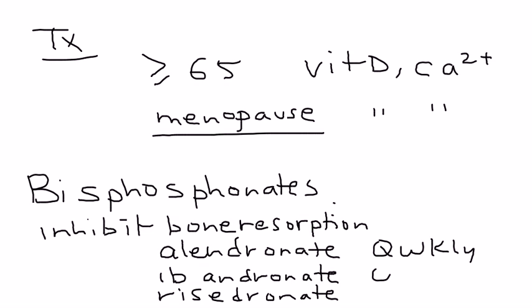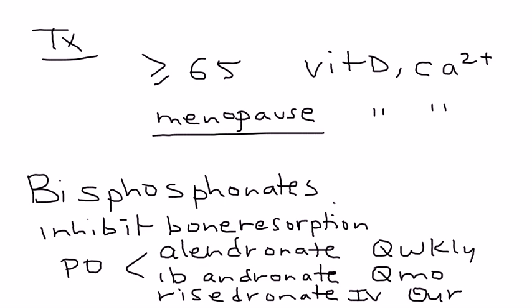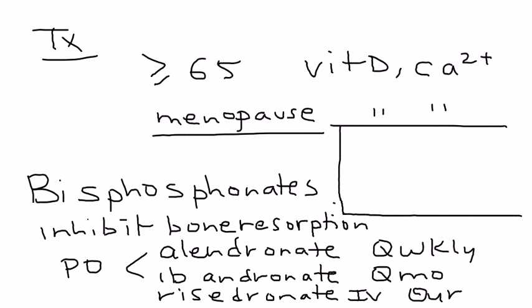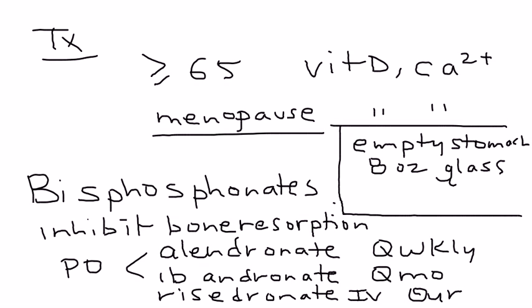The next one is ibandronate, which only has to be taken once a month — one pill a month. Then risedronate is actually an IV medication given only once a year. The oral medications have specific instructions that are sometimes tested: you have to take them on an empty stomach with eight ounces of water.